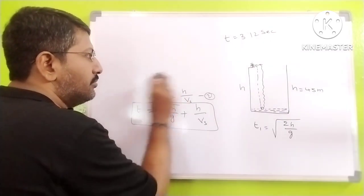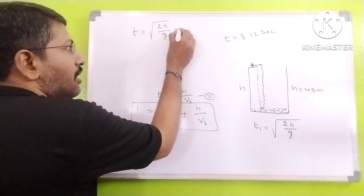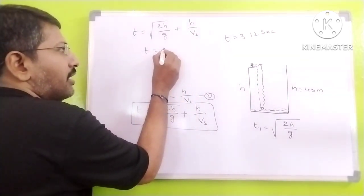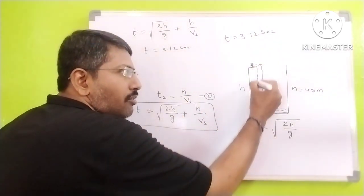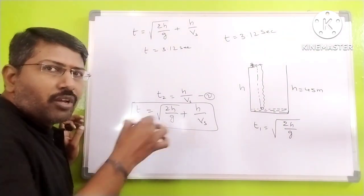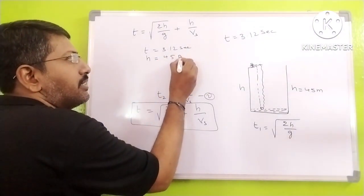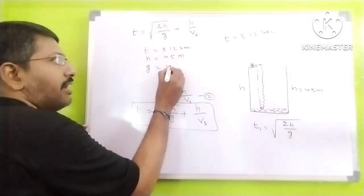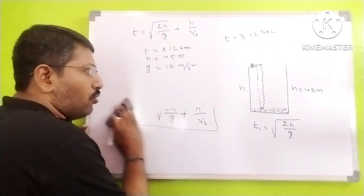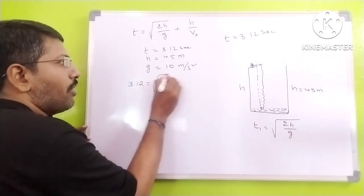The formula is T equal to square root of 2h by g plus h by v_s. Total time is given as 3.12 seconds — the stone reaches the water and then the sound reaches the observer, the whole process taking 3.12 seconds. Depth of the well is 45 meters and acceleration due to gravity is given as 10 meters per second squared. We need to find the speed of sound.